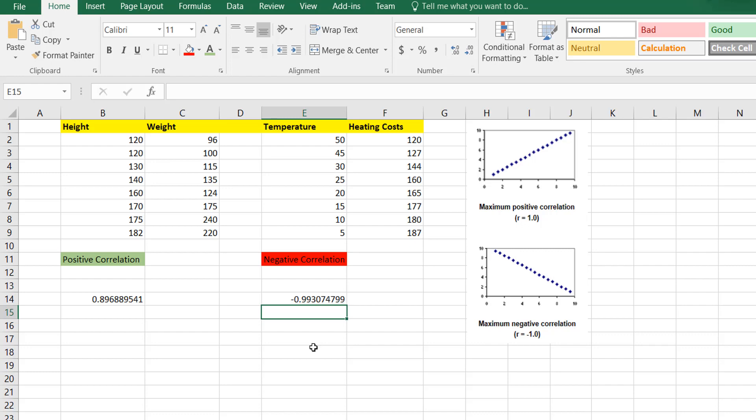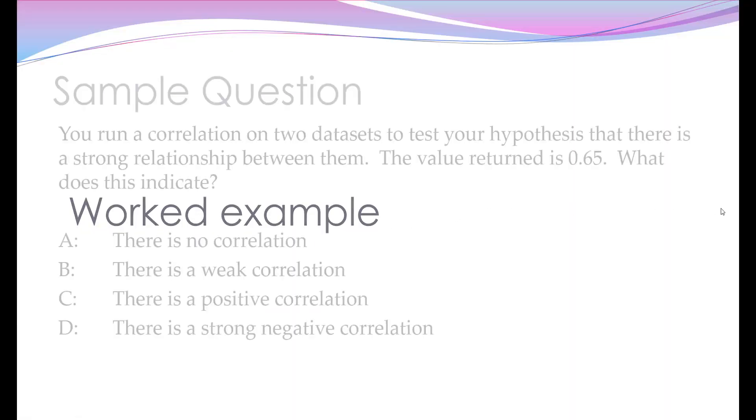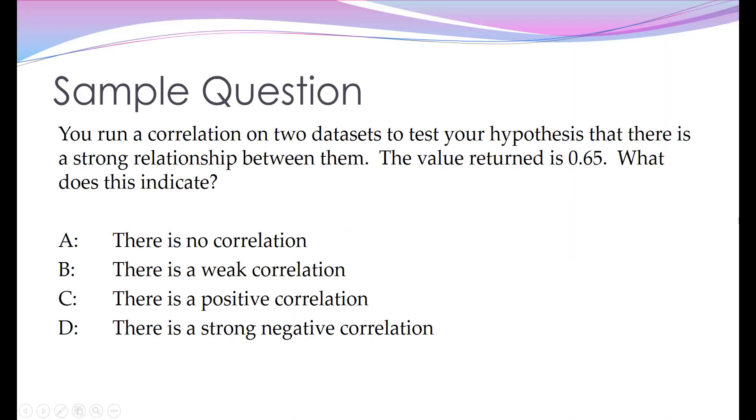So let's do a quick sample question just to make sure that you've absorbed this information and you're ready for any kind of correlation questions that come up on the CCXP exam. You run a correlation on two data sets to test your hypothesis that there is a strong relationship between them. The value returned is 0.65. What does this indicate?